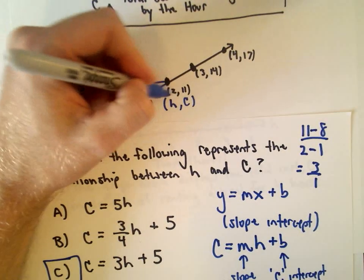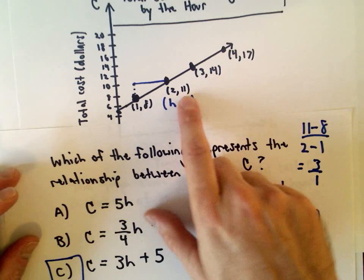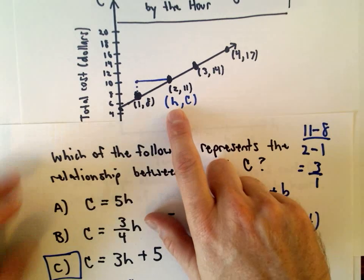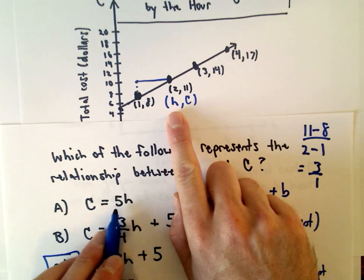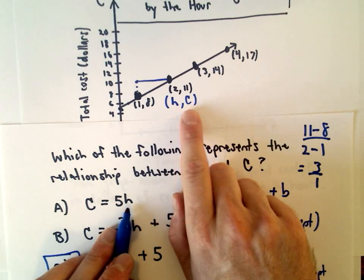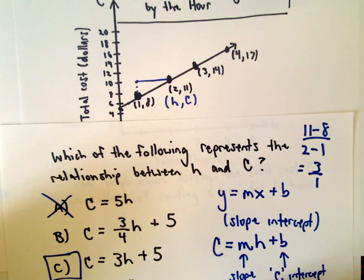And again, once you had a couple points on here you could always start substituting these. For example, we know that two comma eleven is on there. If we substitute in two for H in answer choice A, we would have five times two which is ten. But we should be getting the value of 11, so we know answer choice A is not correct.